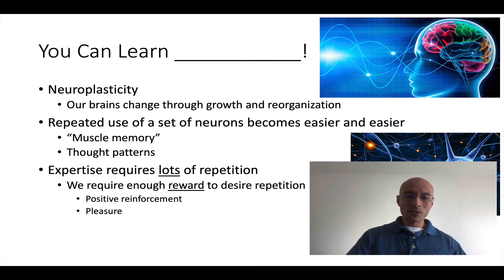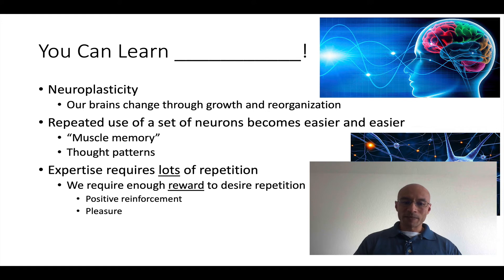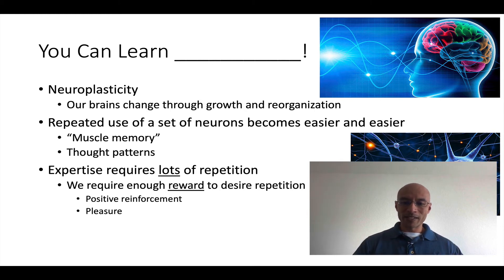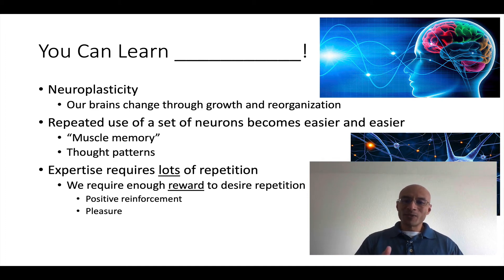To develop these neuropathways, it requires lots of repetition — that's how we train our brains. And in order to get the repetition, we need reward. Maybe we have positive reinforcement — someone tells us we're pretty good for a beginner. So then we think it's worthwhile to practice, and we get the repetition, and the repetition gives us those neuropathways, and we become really good at it. Another external motivator is pleasure. Maybe no one's telling me I'm good at it, but I enjoy doing X, so I'm going to repeat doing X, and after a while I get good at it.